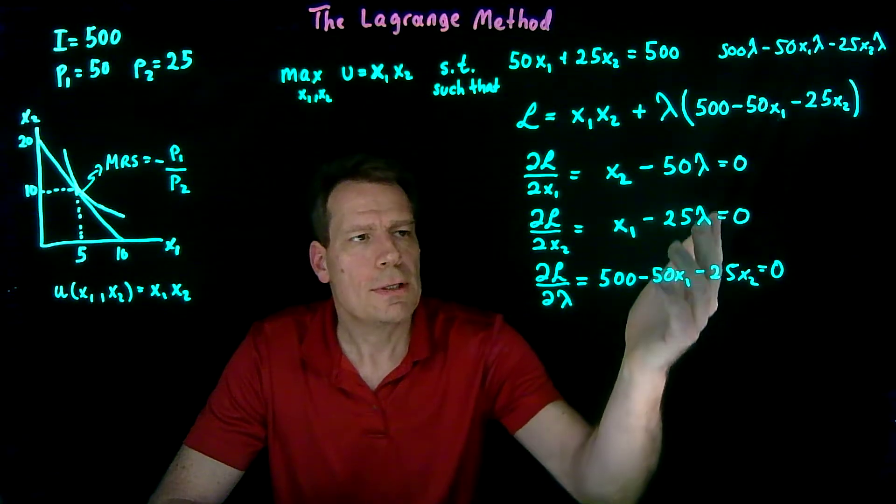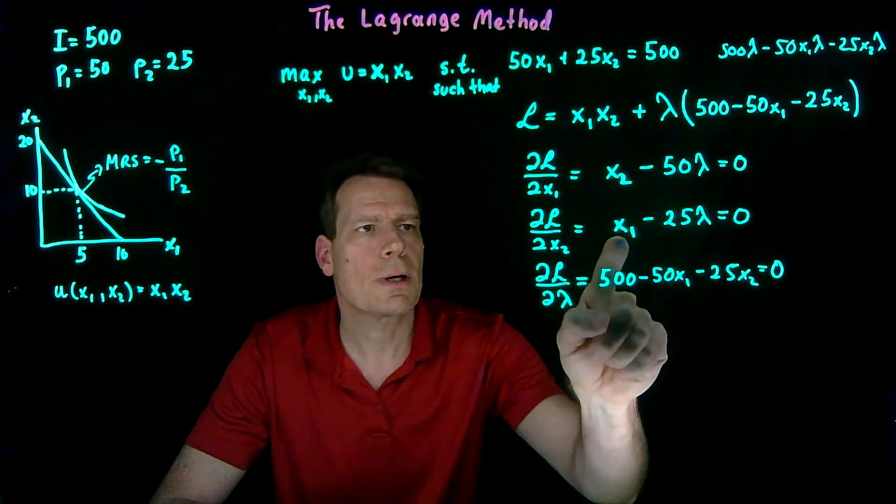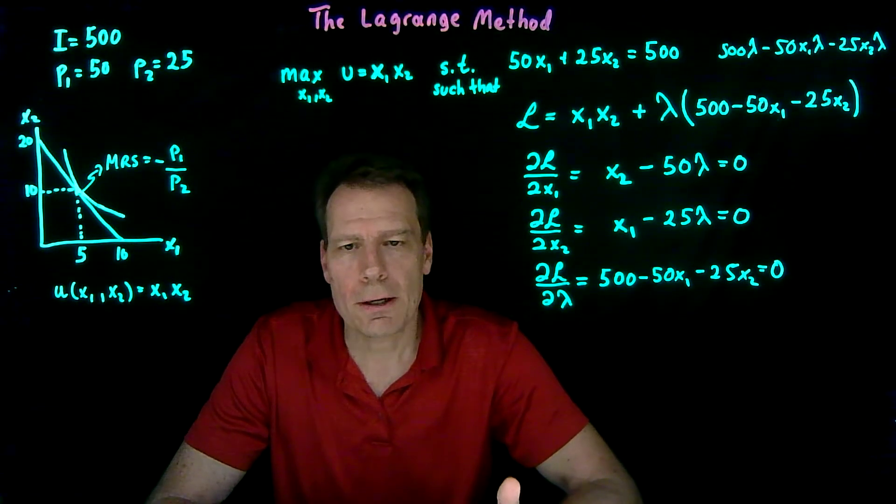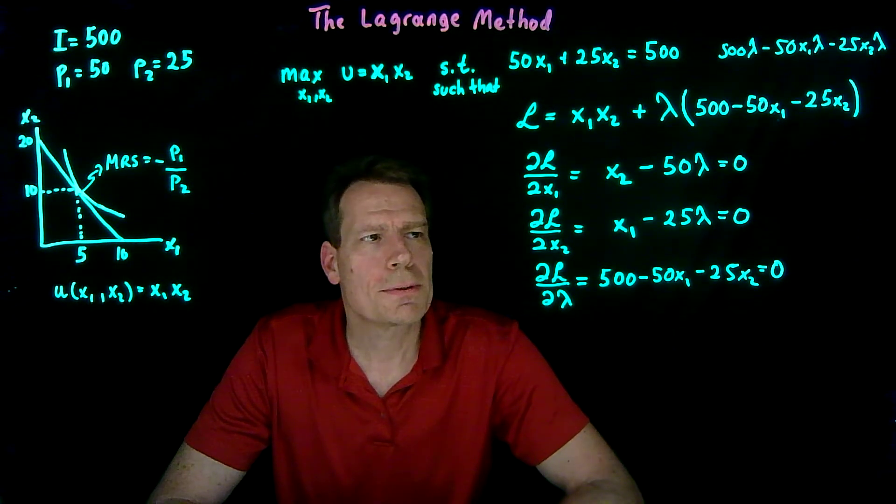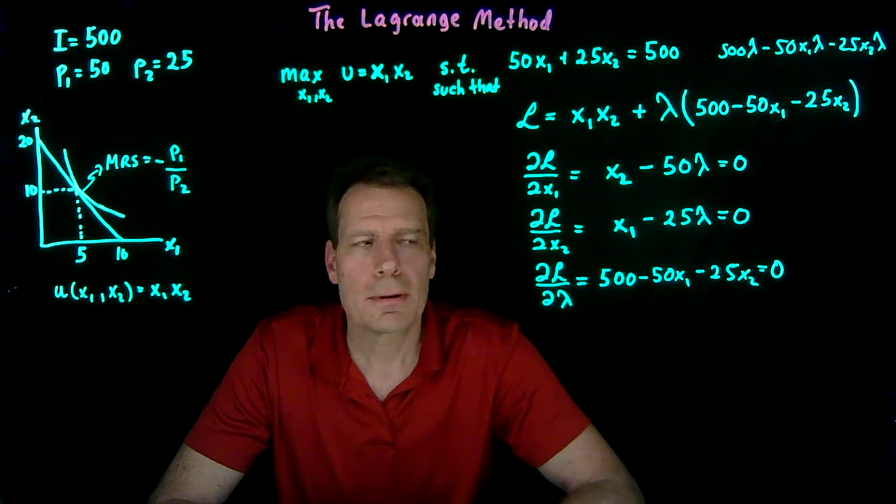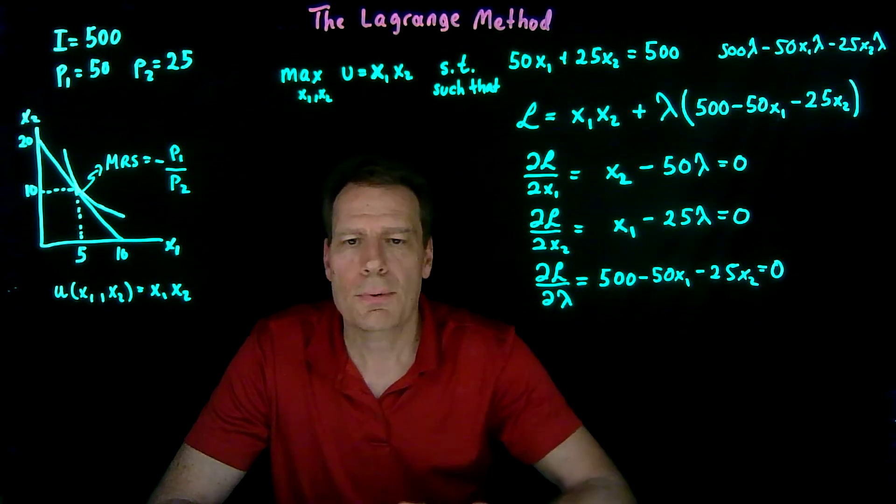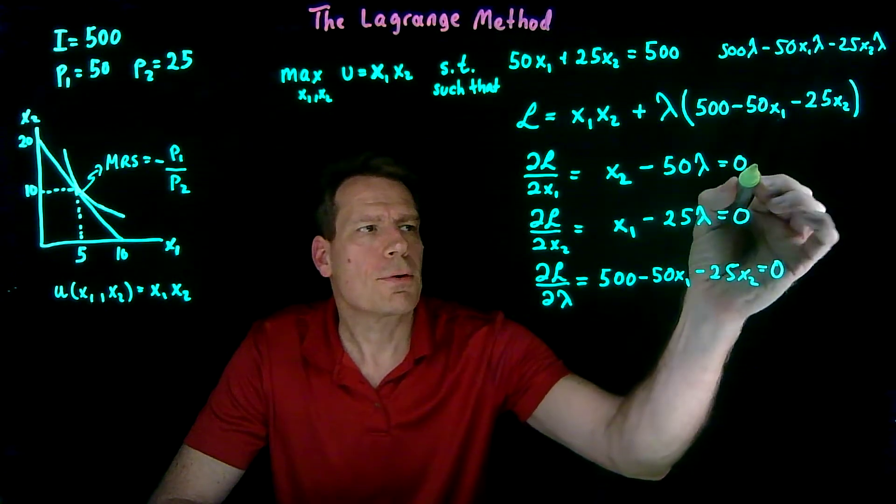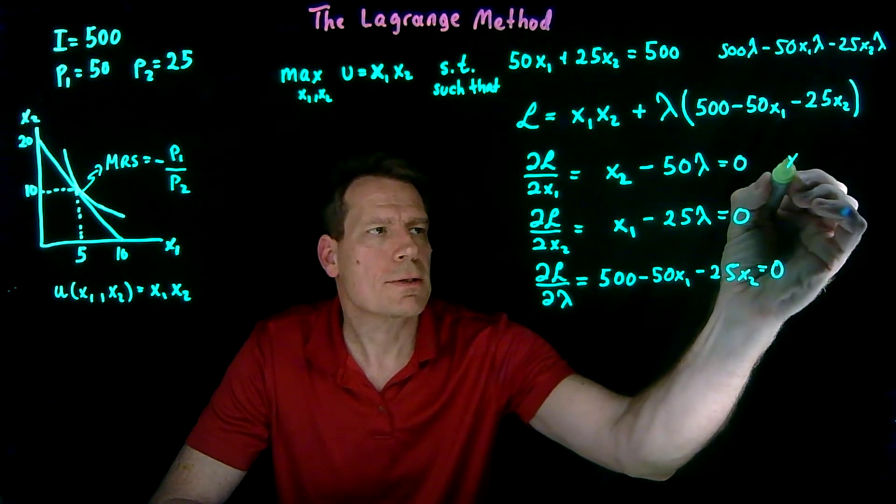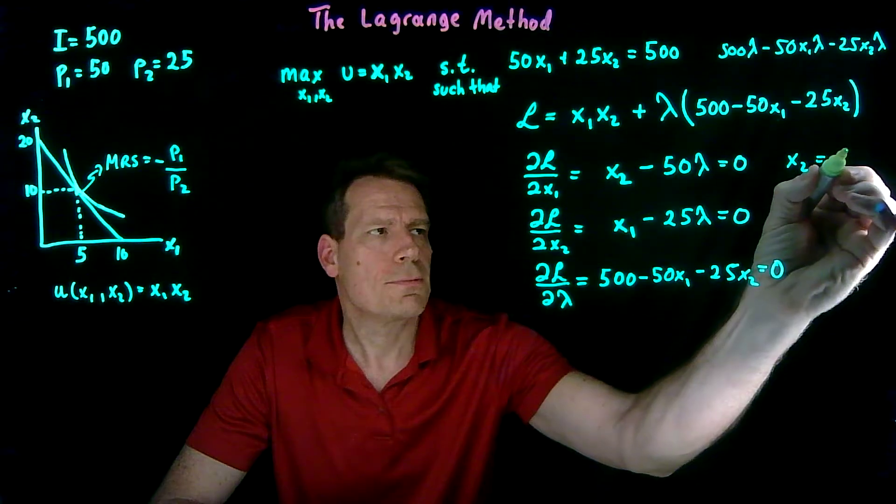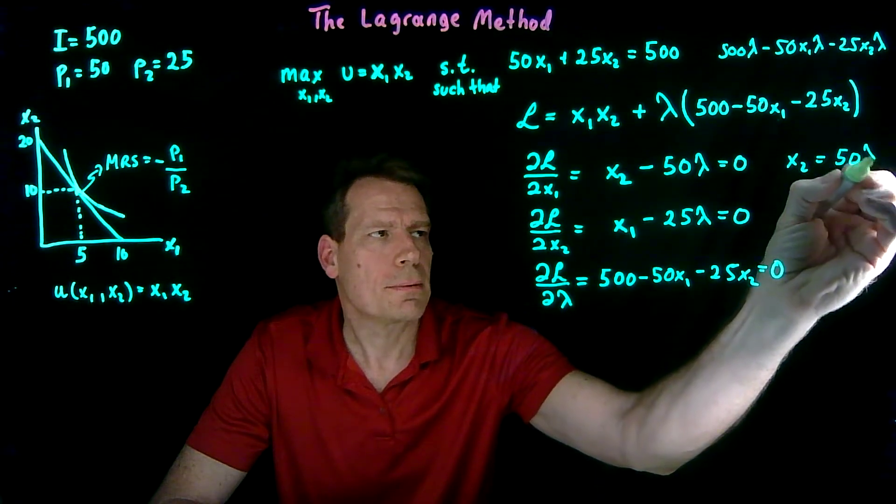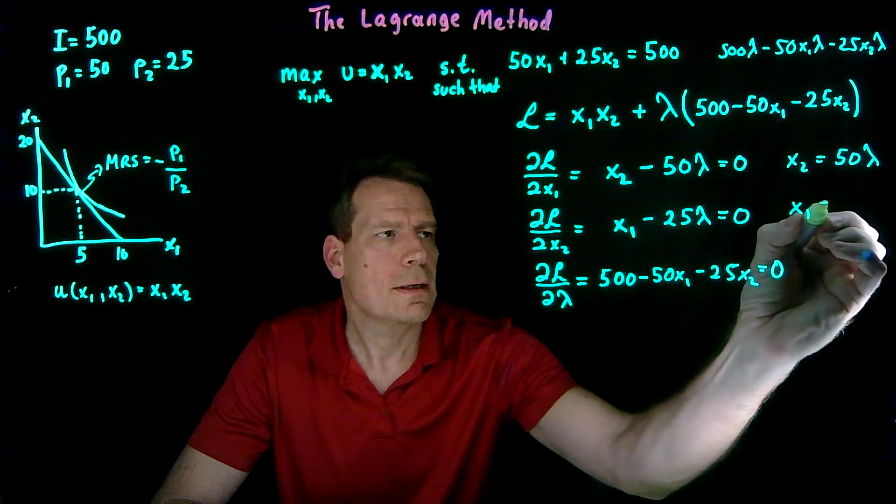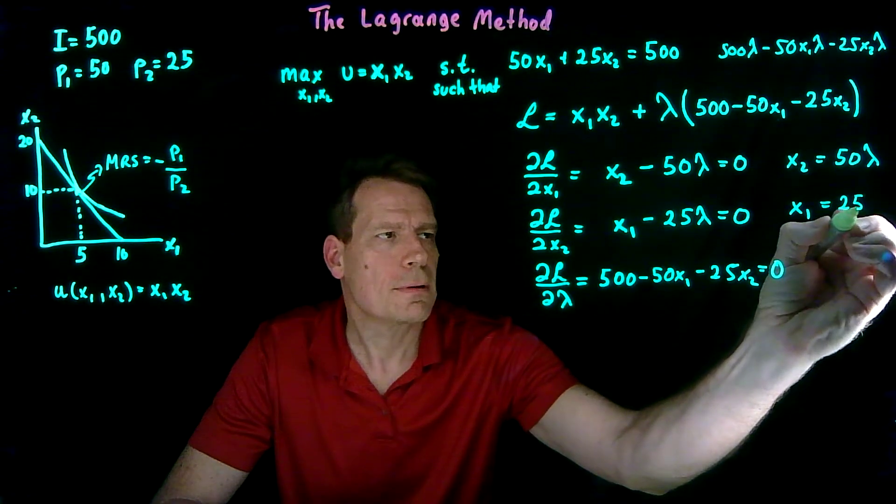So now we have three equations and three unknowns. The three unknowns are x1, x2, and lambda. Since we don't really care about the lambda, we're just going to get rid of it first. So we're going to take these first two equations and rewrite them. Take the negative term to the other side, so this becomes x2 is equal to 50 lambda. We'll do the same thing with the second equation. x1 is equal to 25 lambda.